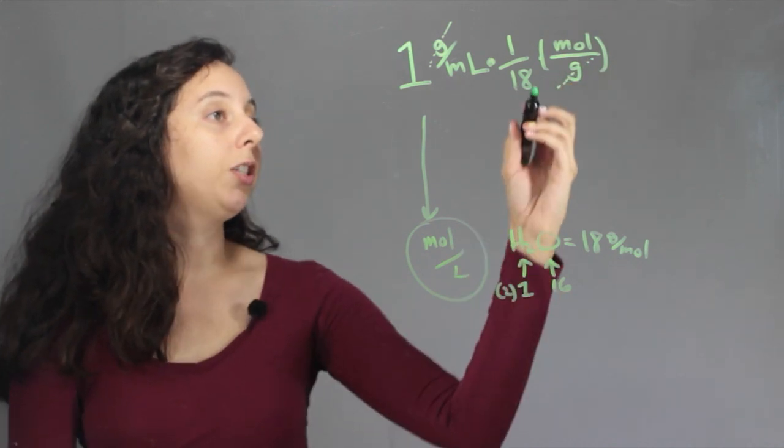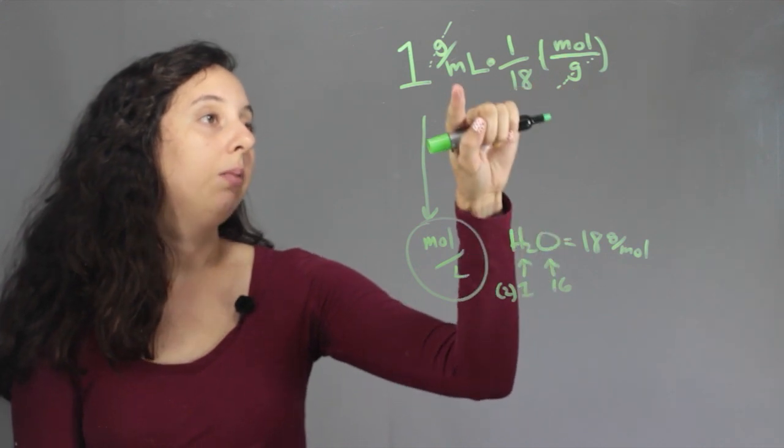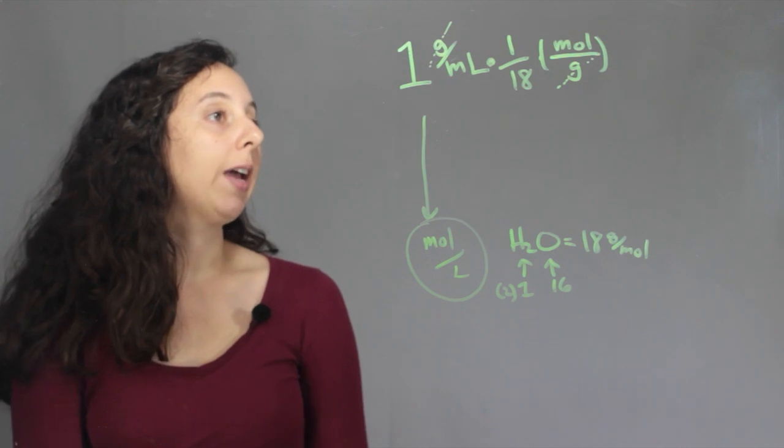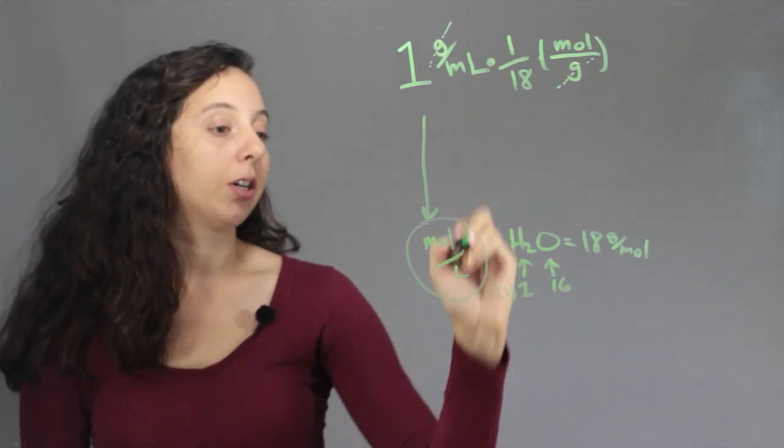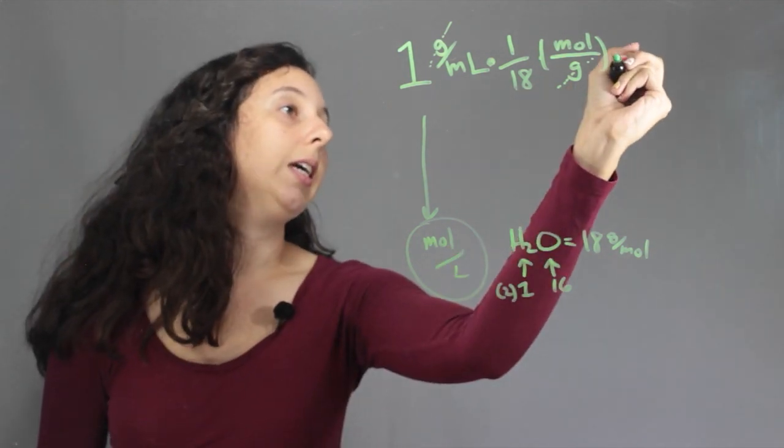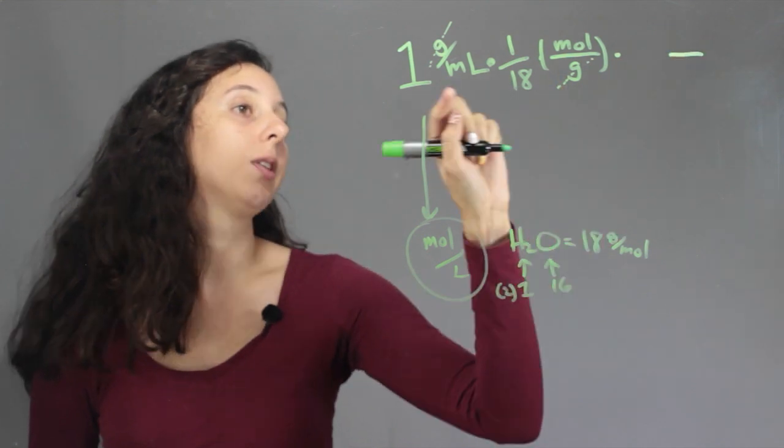And so if we do this though, we're still going to have our answer in milliliters over moles. And so what we have to do is now get milliliters to turn into liters. So to cancel out milliliters, we're going to have to have milliliters on the top because it's on the denominator now.